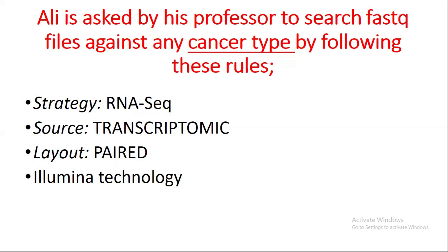Before the practical, suppose Ali is asked by his professor to search FASTQ files for any cancer type by following these rules. The strategy should be RNA-seq, the source should be transcriptomic — because we are dealing with messenger RNA — the layout should be paired-end, and the sequencing files should be generated through Illumina technology. Following these four criteria, we are going to search for data related to any type of cancer.